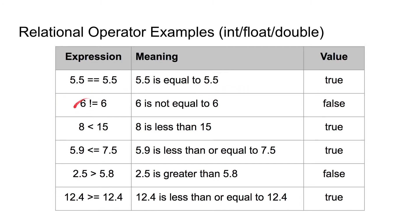The next example uses the not equals operator, which says 6 is not equal to 6. Since we know they are equal, this is a false expression. The next one uses the less than operator, and this means 8 is less than 15, which we know to be true — so this is a true expression.